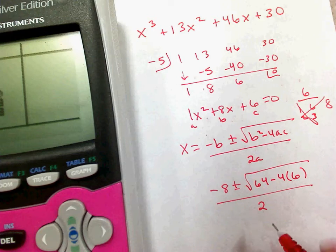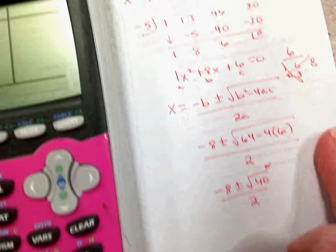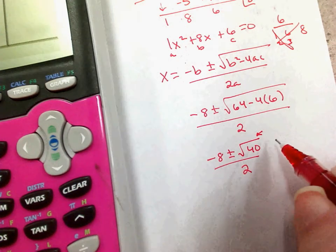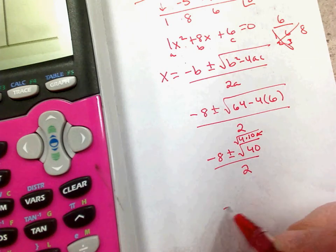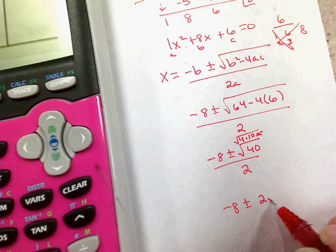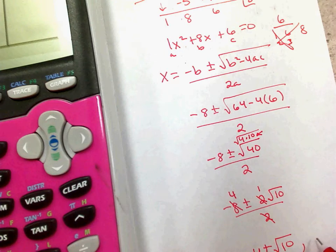So, opposite b plus or minus the square root of b squared minus 4 times a times c all over 2a. 64 minus 24 is 40, which I can simplify. There's a perfect square that goes into 40, right? And that's 4 times 10. So, if I write this as 4 times 10, well, the square root of 4 is 2. So, I've got negative 8 plus or minus 2 root 10 over 2. 8 and 2 both divide by 2. This one is 4. This one is 1. So, my final answer is negative 4 plus or minus the square root of 10. And negative 5.